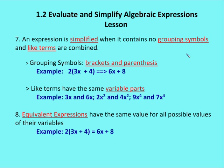Now, like terms have the same variable parts. So if I have 3x and 6x, those are like terms, because the variable part would be x. 2x squared and 4x squared are like terms, because the variable part is x squared. 9x to the fourth and 7x to the fourth, those are like terms, because x to the fourth, the variable part, is also the same. I can add those. If I had 3x plus 6x, I could simplify that to 9x. If I had 2x squared minus 4x squared, that would be minus 2x squared. And if I had 9x to the fourth plus 7x to the fourth, I could simplify that to 16x to the fourth.